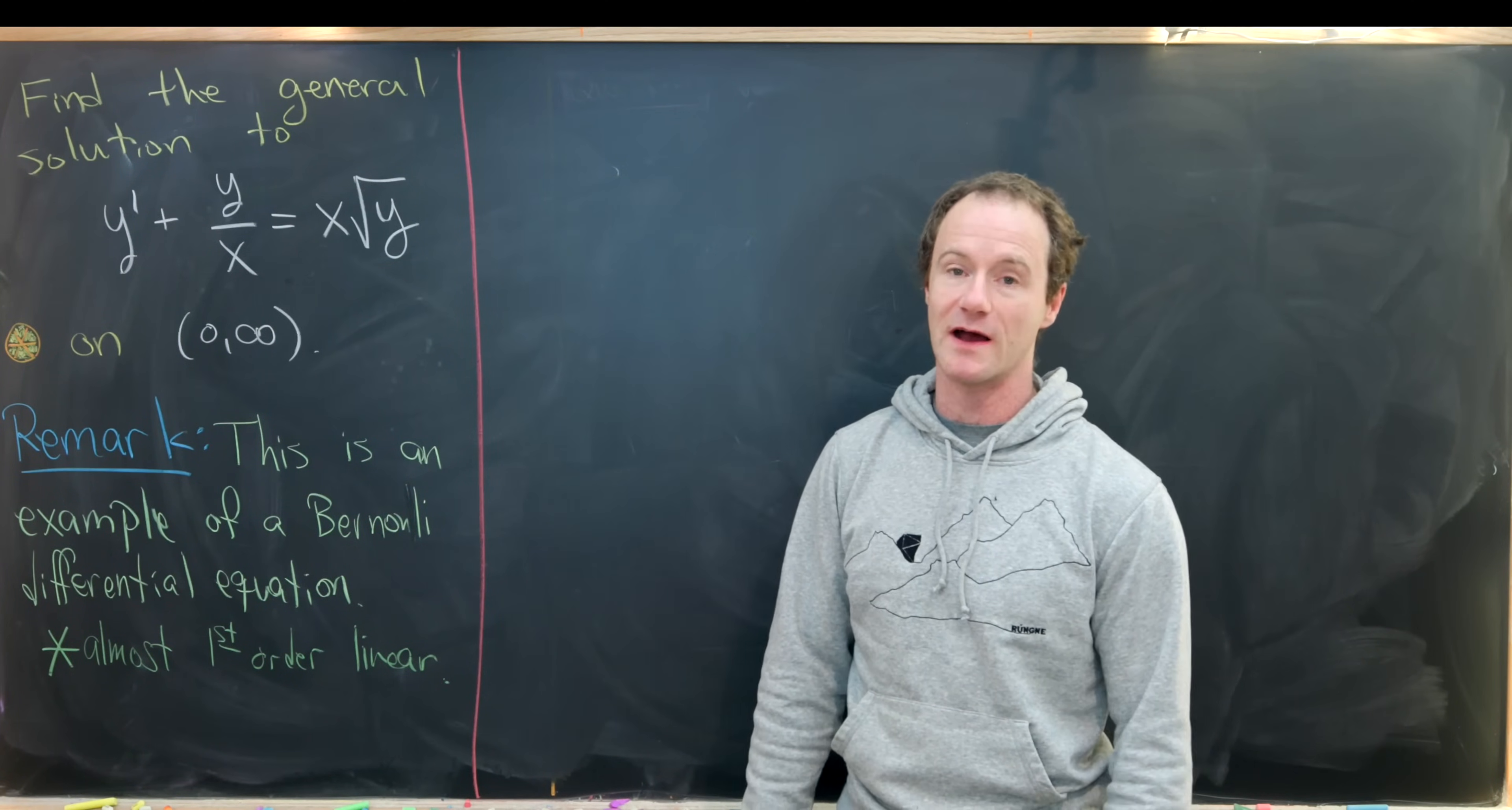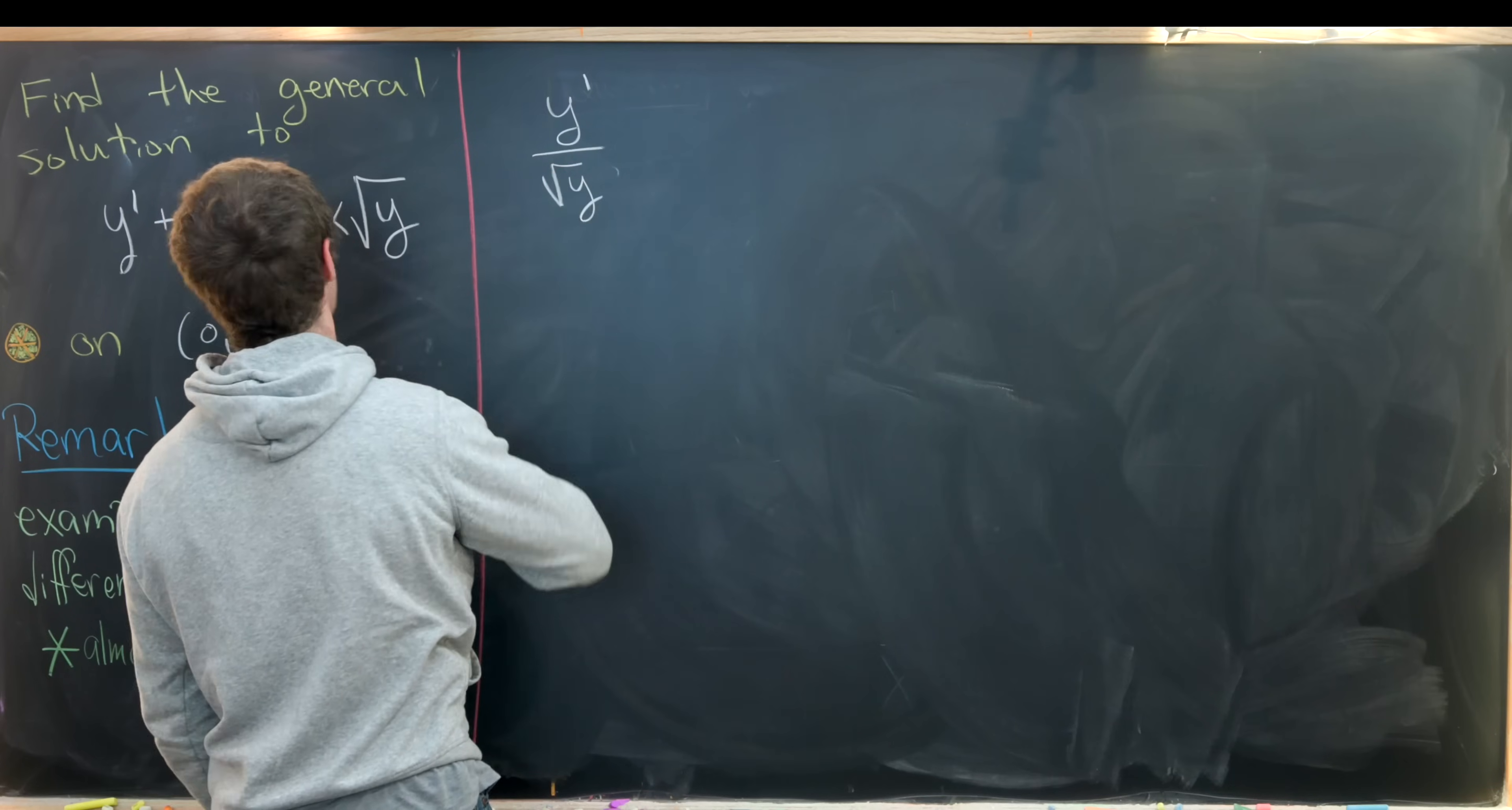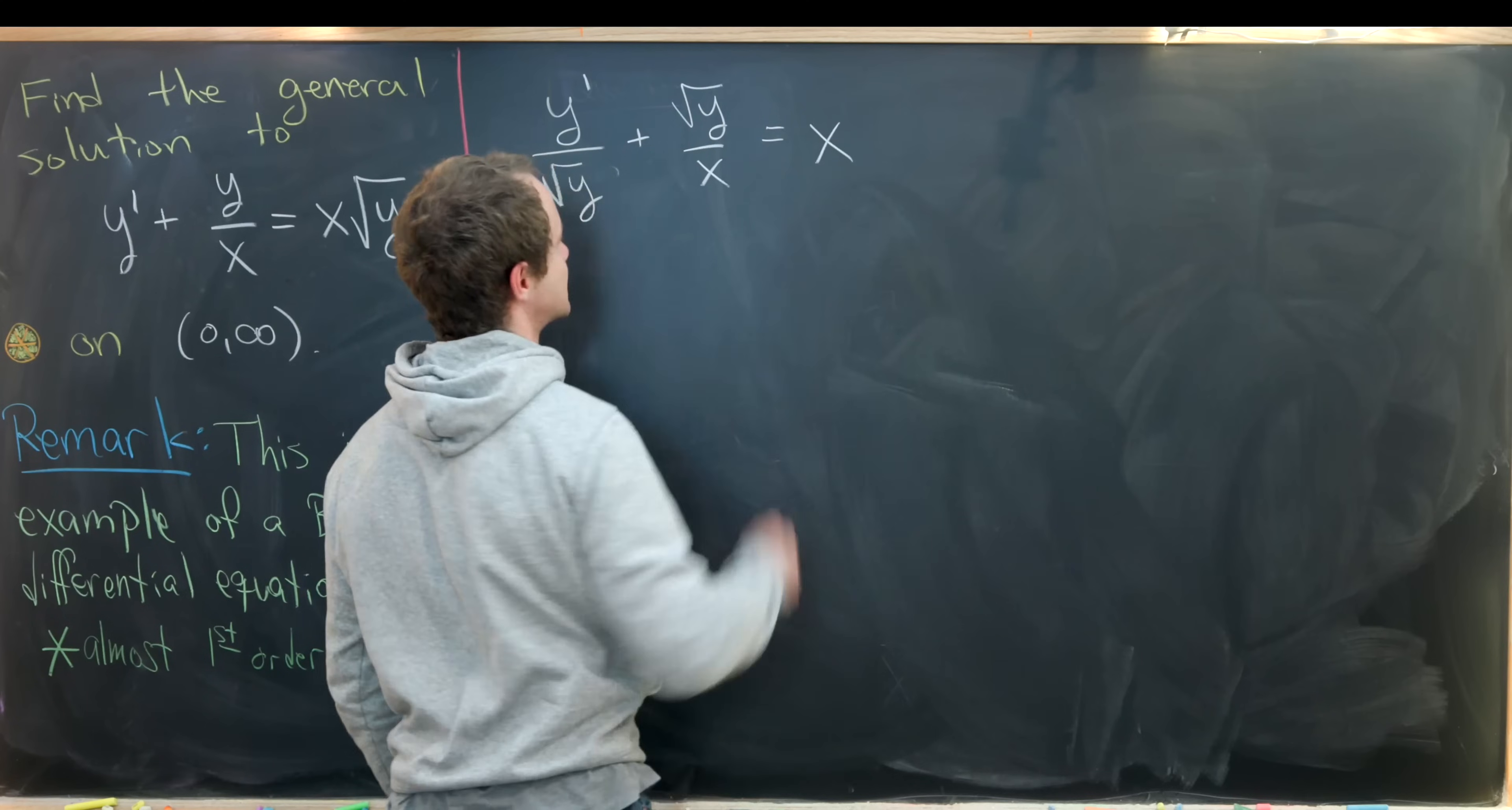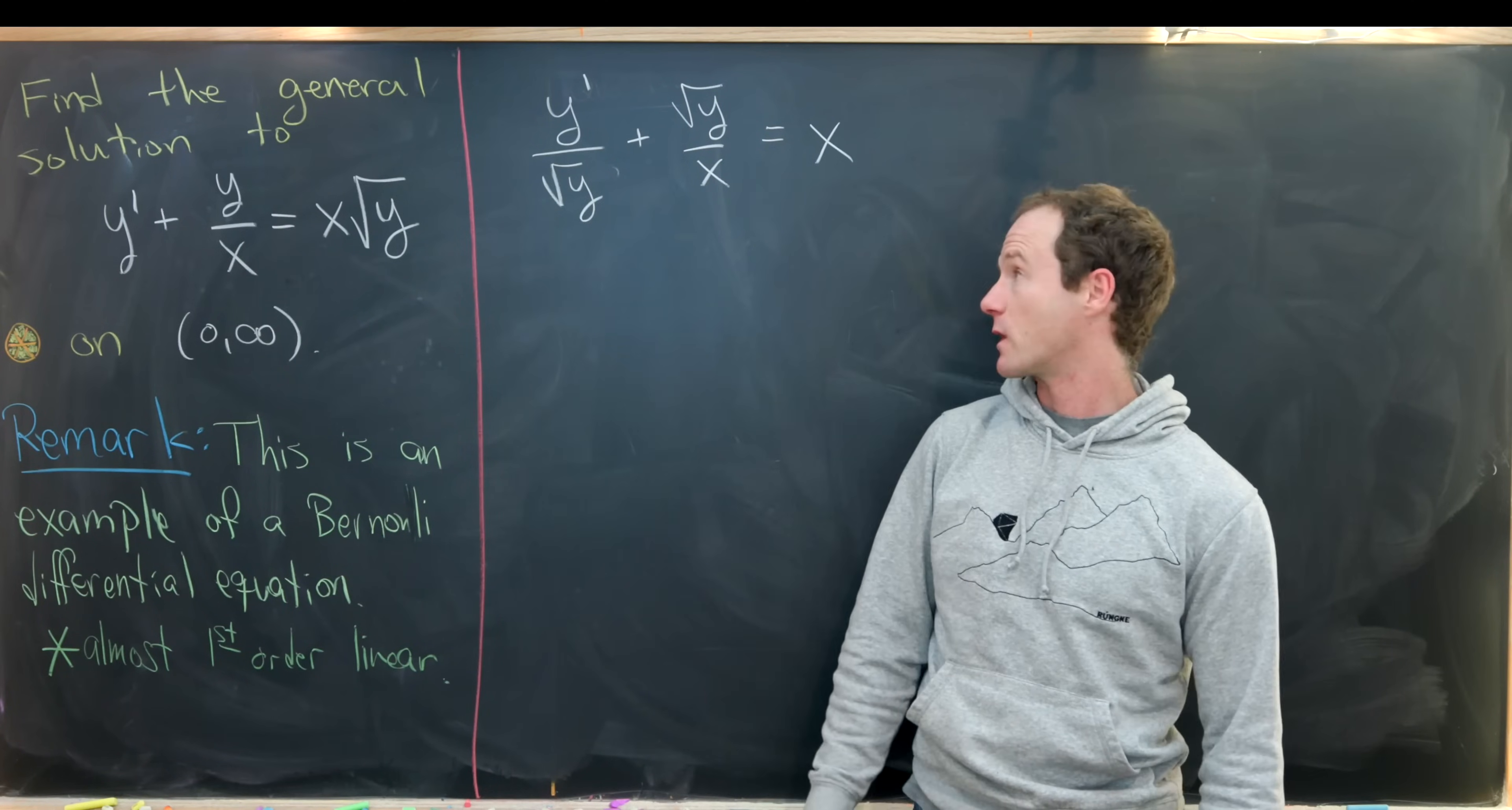The first thing I'd like to do is multiply this entire equation by one over the square root of y. In other words, we'll divide every term by the square root of y. That gives me a new differential equation that looks like y prime over the square root of y plus the square root of y over x equals x.